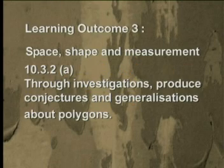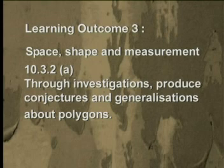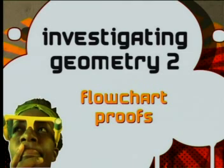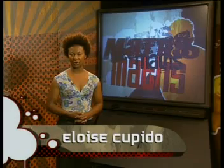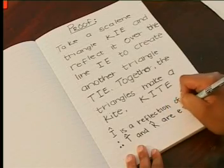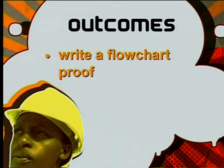Hi, my name is Eloise. So far in the series, we've used the properties of quadrilaterals to form definitions for different types of quadrilaterals. We've proved a conjecture about the angles of a kite using transformation geometry, and then we wrote the proof in a paragraph. Today, we're going to look at a different way of writing a proof. By the end of this lesson, you should be able to write a flowchart proof using statements and reasons.